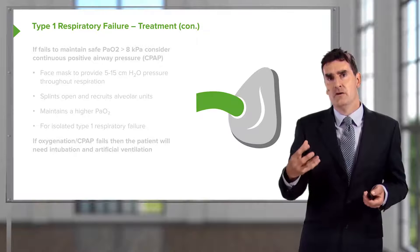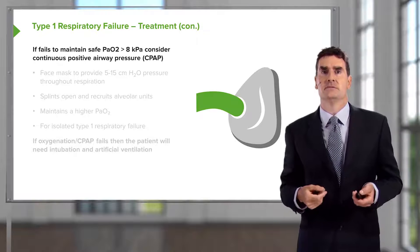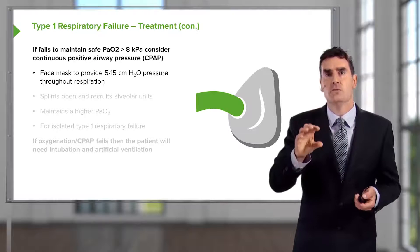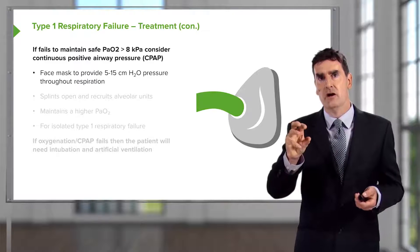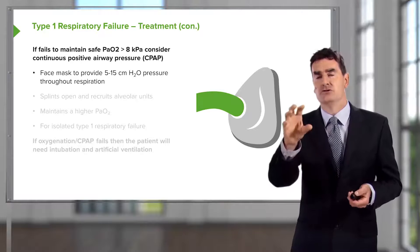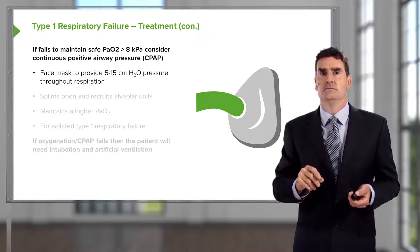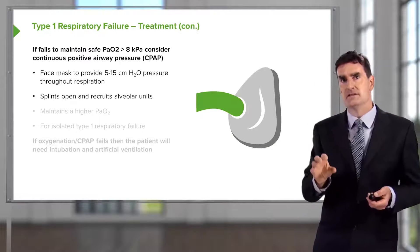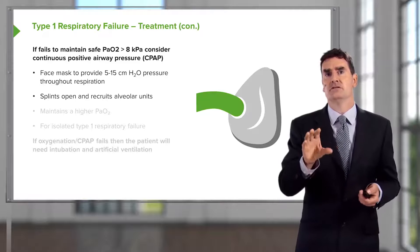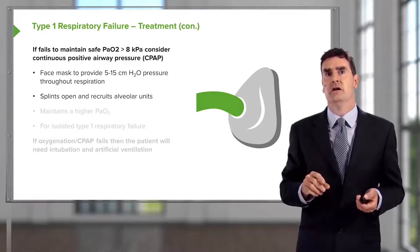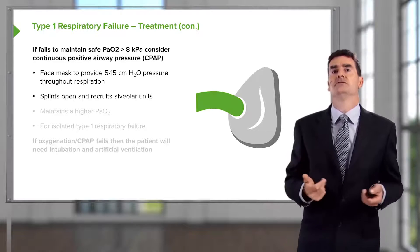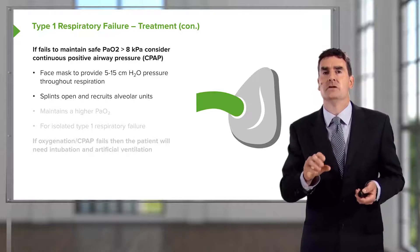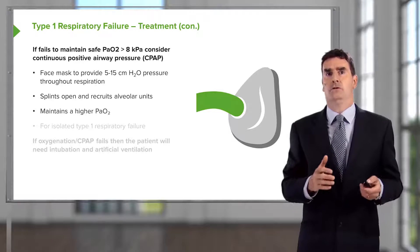There is a non-invasive form of ventilatory support called Continuous Positive Airway Pressure, CPAP. This is a face mask that provides a small amount of additional pressure on the inhaled air-oxygen mix — 5 to 15 centimetres of water — and it maintains that pressure through the whole of respiration, both inspiration and expiration. What this does is recruit more alveolar units that the patient can use during respiration, splinting them open during inspiration, which allows the inhaled oxygen concentration to maintain a better arterial oxygen level.